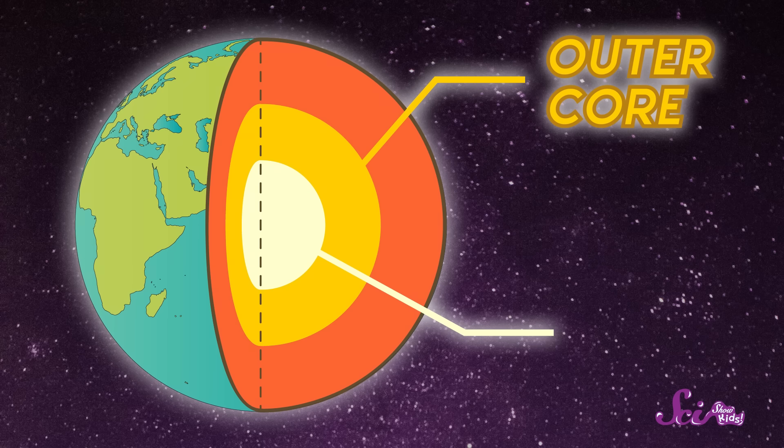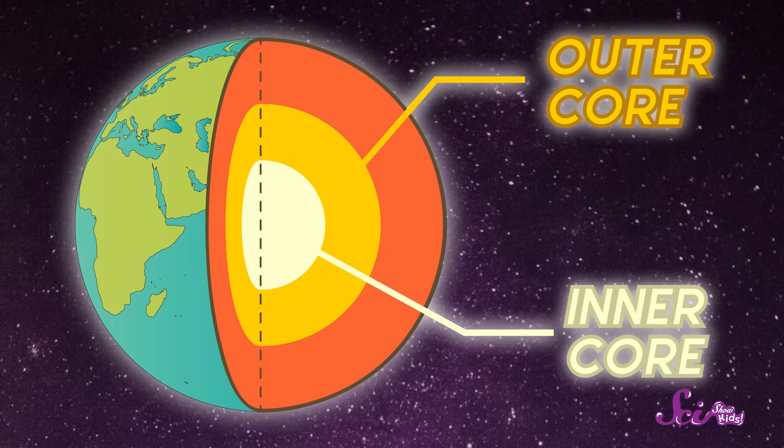And at the very center of the Earth, there's the inner core, where again, it's super hot. But even though it's really, really hot all the way down there, the inner core is actually solid. It doesn't move or flow like the outer core. Why?